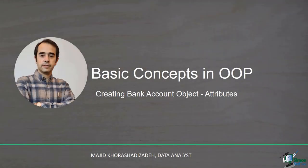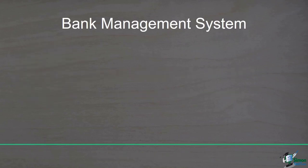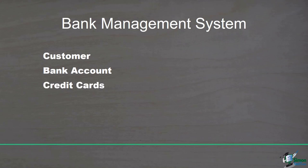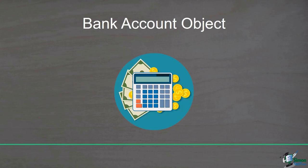In the previous video, I talked about the concept of object in OOP paradigm and showed you that you can think of anything as an object. Now let's define our first object in Python. Suppose that you want to develop a bank account system. In this system there are many objects such as customers, bank accounts, credit cards, checks, and mortgages. Here, let's focus on bank account as an object.